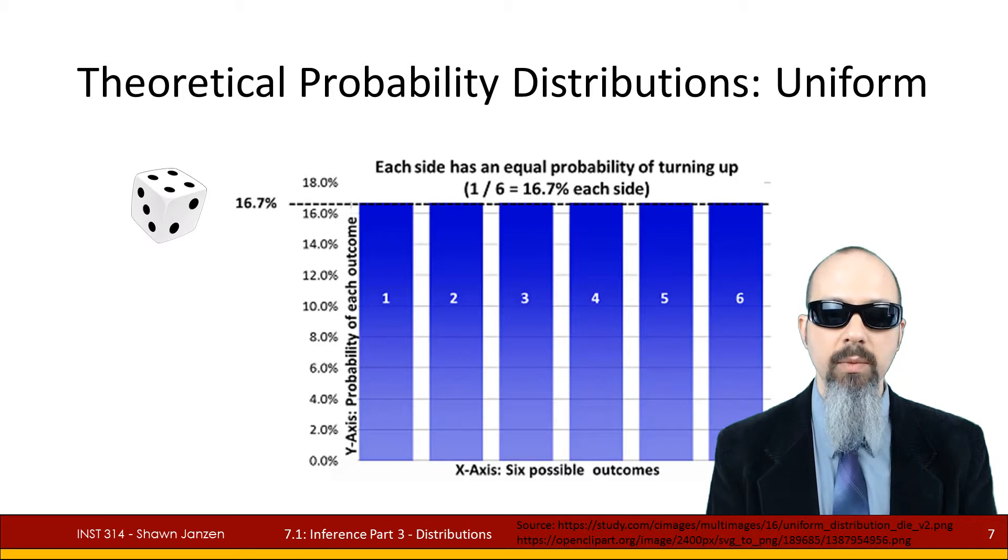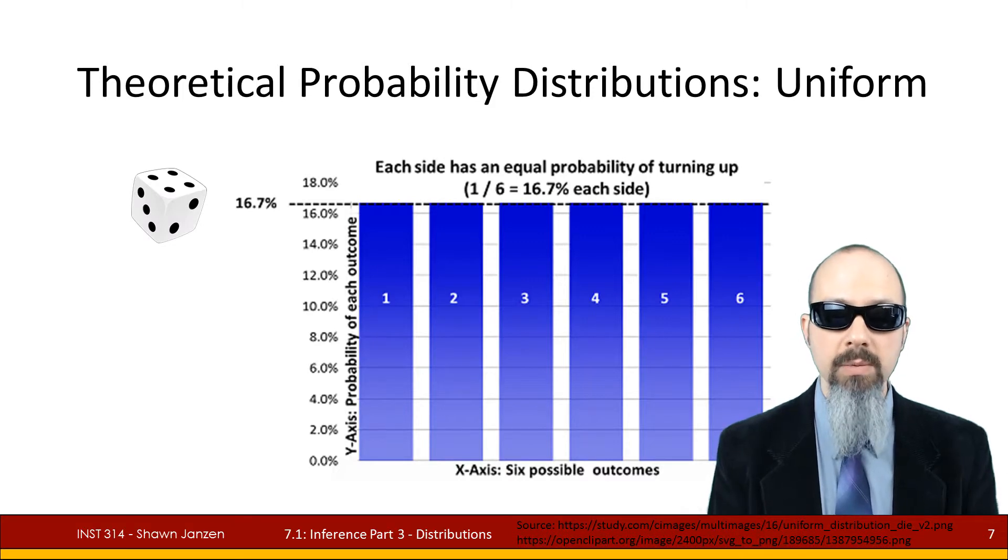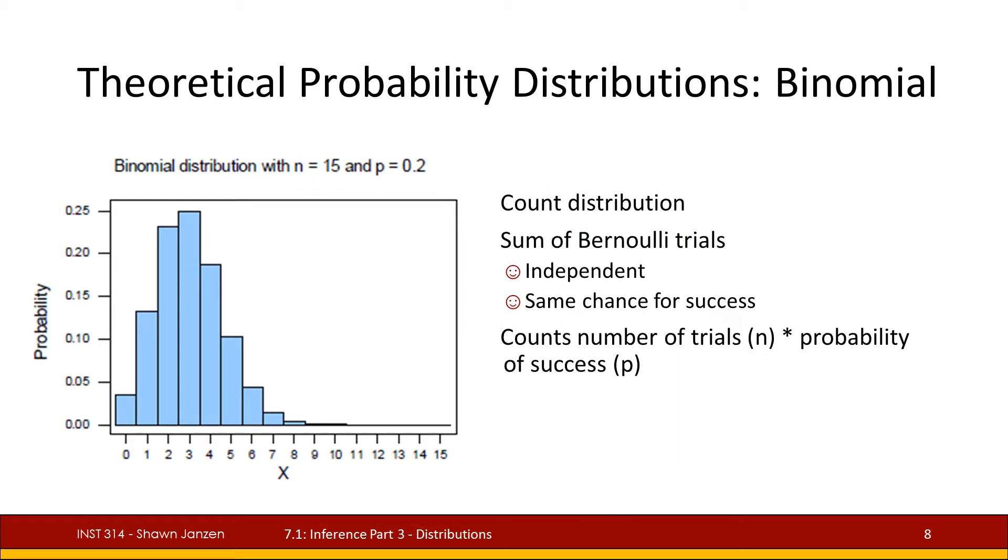If we were to plot the curve of a uniform distribution it would just sort of look like a big box on your screen. There are no tails because as there are tails in a distribution the probabilities of getting values under that tail become smaller and smaller and with the theoretical uniform everything's the same.